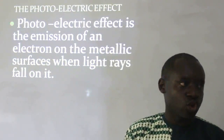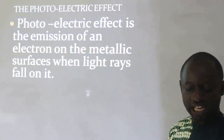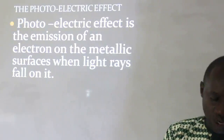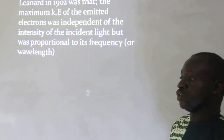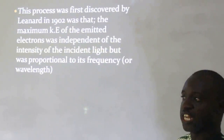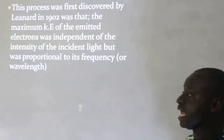Today we are going to continue our discussions on energy quantization with the sub-topic: the photoelectric effect. The photoelectric effect is the emission of an electron from a metallic surface when a light ray falls on it. This phenomenon was discovered by a man called Leonard around 1902. In his research, he discovered that when a light ray falls on a photocell made up of a metal, and he increases the intensity of the light,